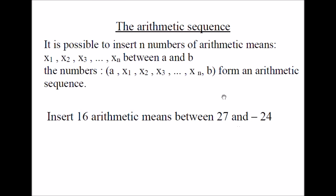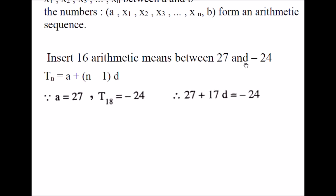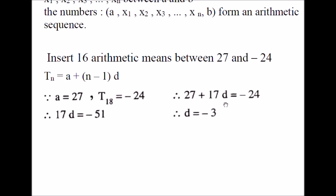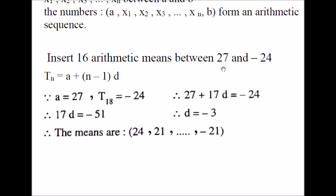To insert 16 arithmetic means between two numbers, we have an arithmetic sequence where the first term A is 27, the last term is negative 24, and the number of terms is 16 plus the first and last term — so 16 plus 2 equals 18 terms. So T18 equals negative 24. Using the rule Tn equals A plus n minus 1 times D, with n equal to 18: 27 plus 17D equals negative 24. Solve: 17D equals negative 51, therefore D equals negative 3.